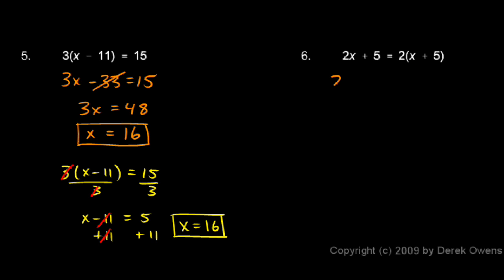We'll leave the left side as it is. So I'll write 2x plus 5. And on the right I distribute the 2 and that gives me 2 times x which is 2x plus 2 times 5 which is 10.